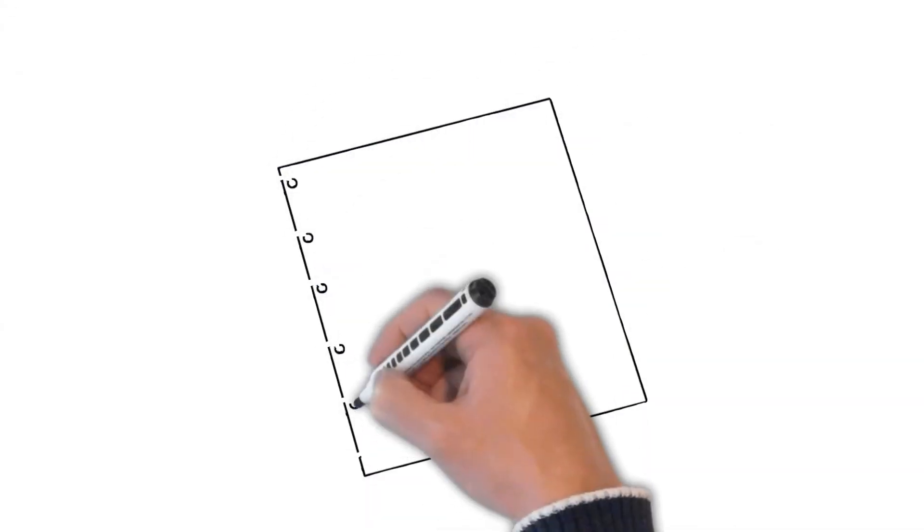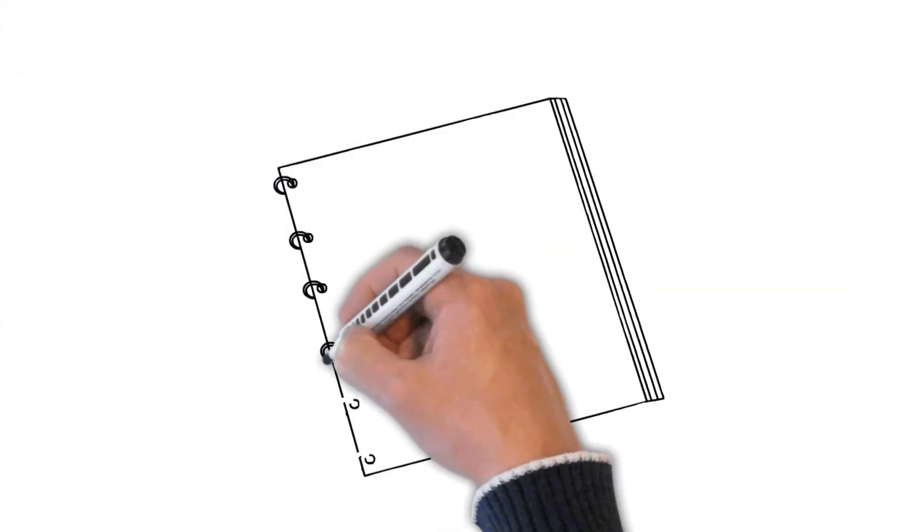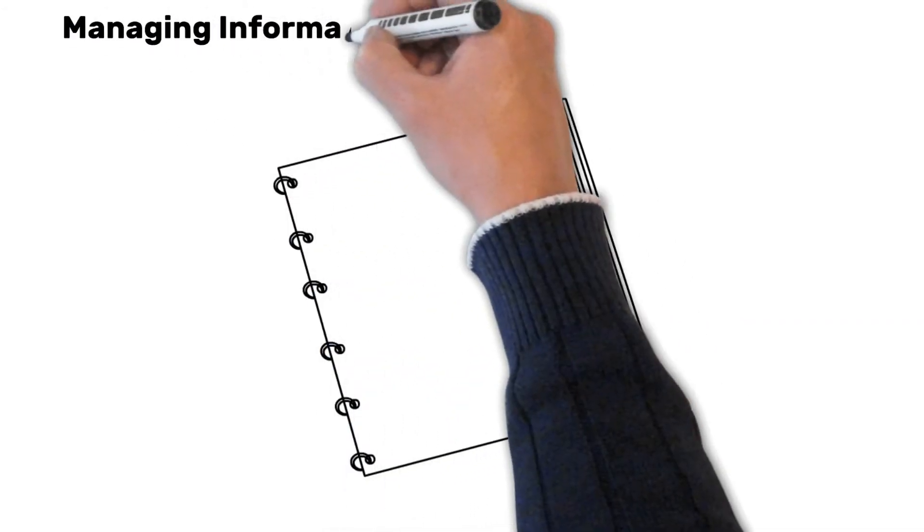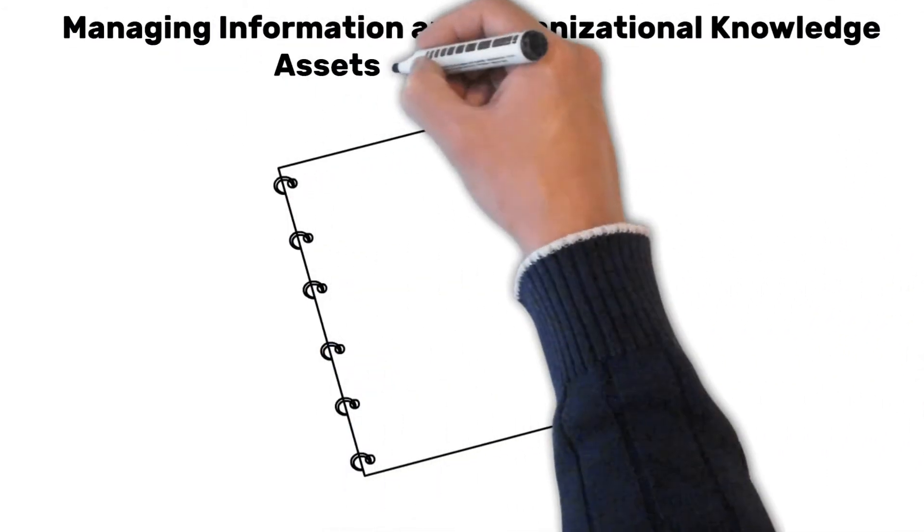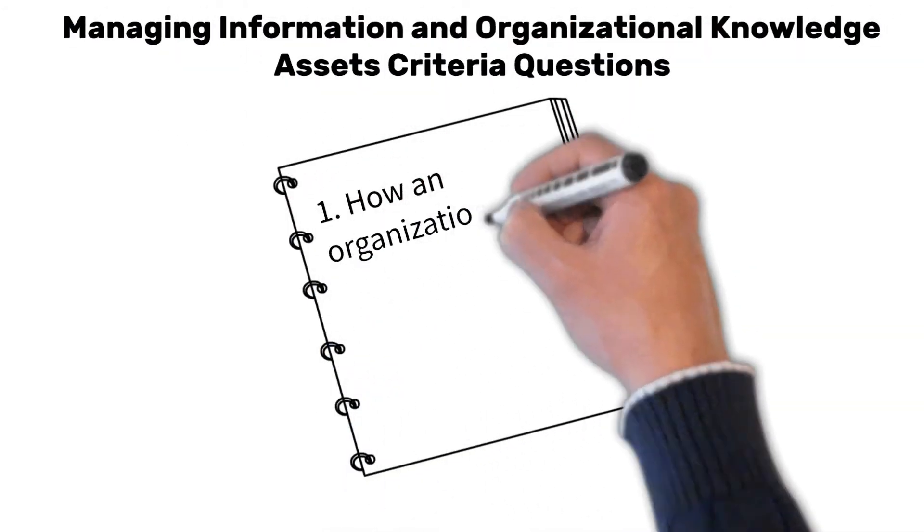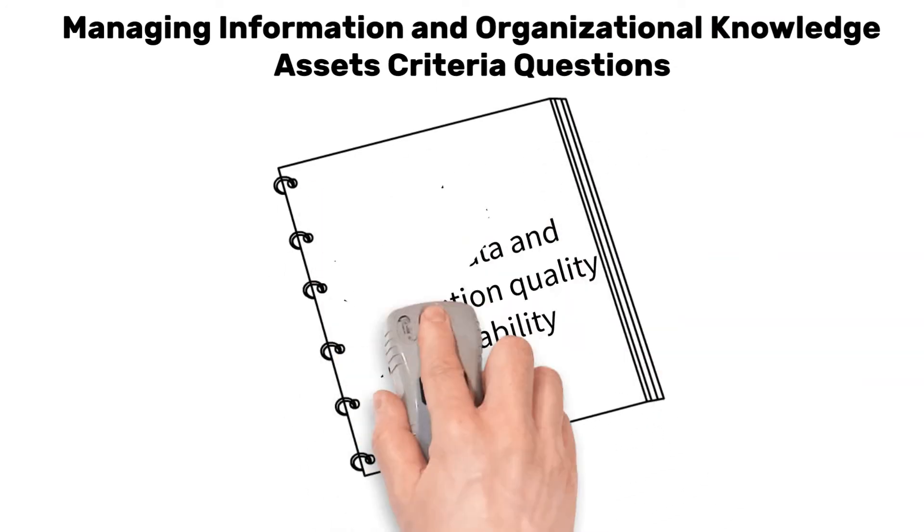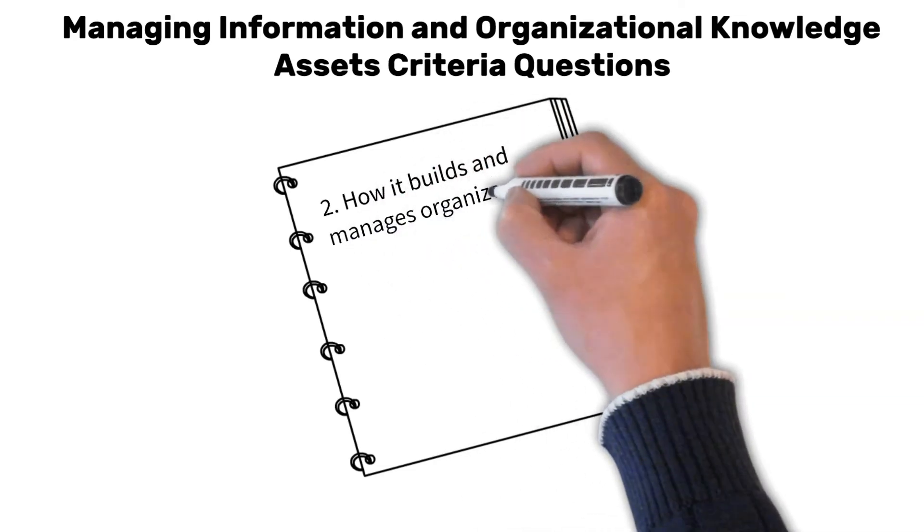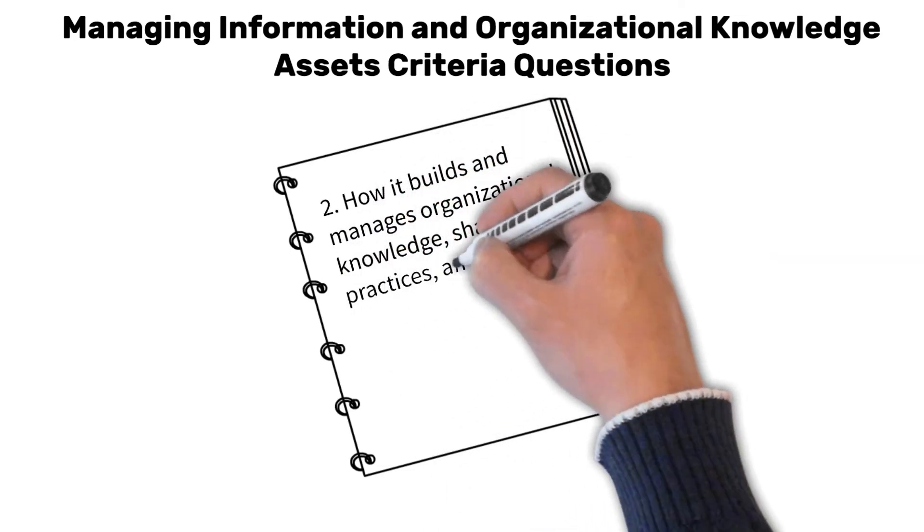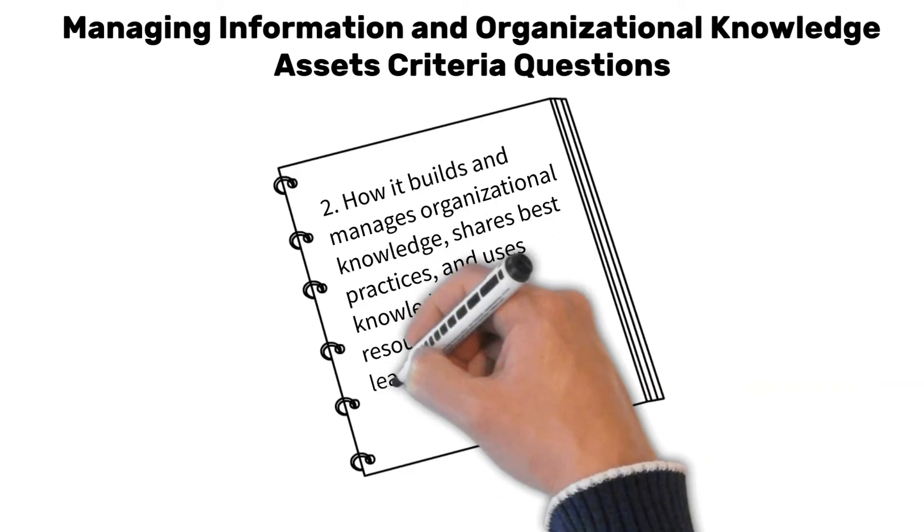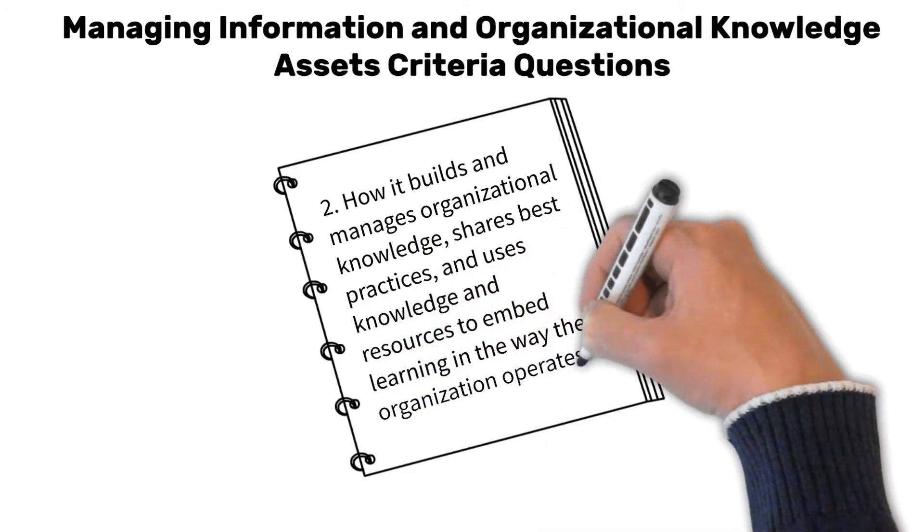Another important part of the performance excellence system is managing information and organizational knowledge assets. Criteria questions in this area ask how an organization ensures data and information quality and availability, how it builds and manages organizational knowledge, shares best practices, and uses knowledge and resources to embed learning in the way the organization operates.